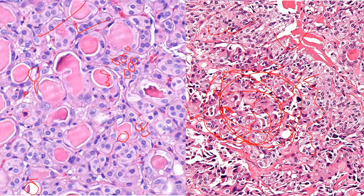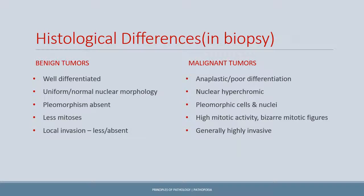The takeaway message is that benign tumors are well differentiated while malignant tumors are poorly differentiated with hyperchromic nuclei and pleomorphism. In benign tumors, pleomorphism is absent and the cells resemble the normal morphology of the organ. However, these are general principles — there are exceptions that don't follow these rules, so keep that in mind.